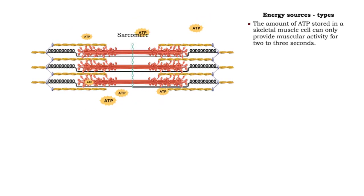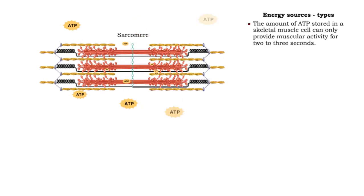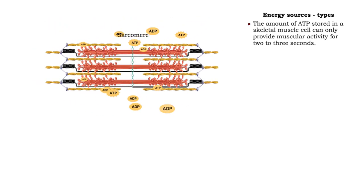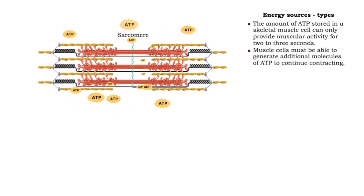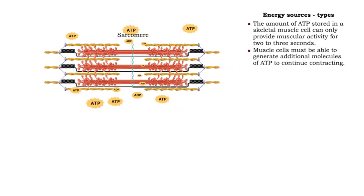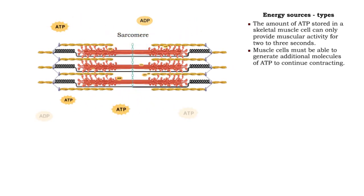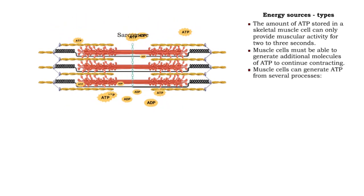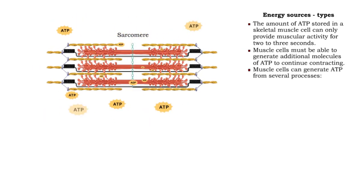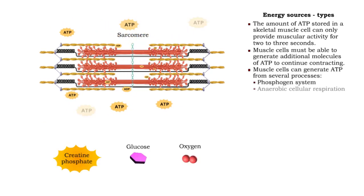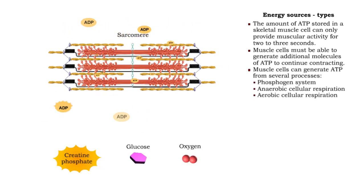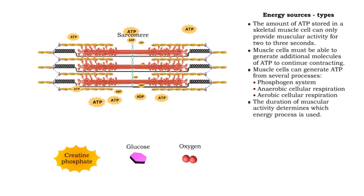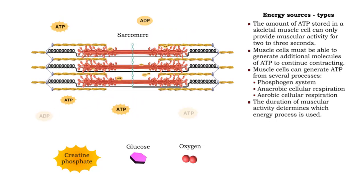The amount of ATP stored in a skeletal muscle cell can only provide muscular activity for 2 to 3 seconds. To continue activity beyond a few seconds, muscle cells must be able to generate additional molecules of ATP. Muscle cells can synthesize ATP from the following sources: creatine phosphate and either anaerobic or aerobic cellular respiration. The duration of muscular activity determines which energy source is used.